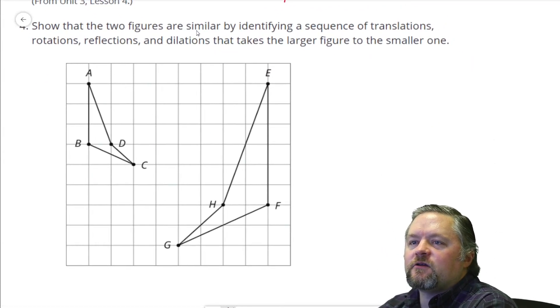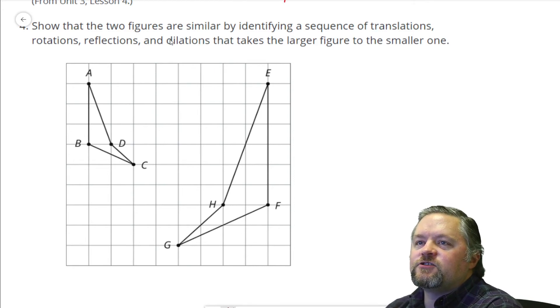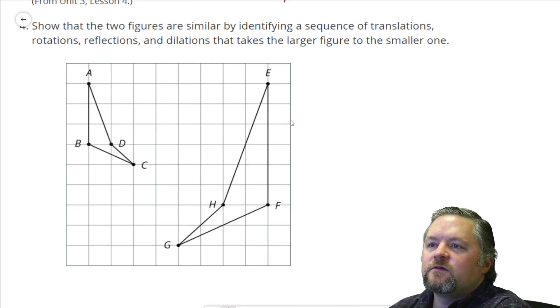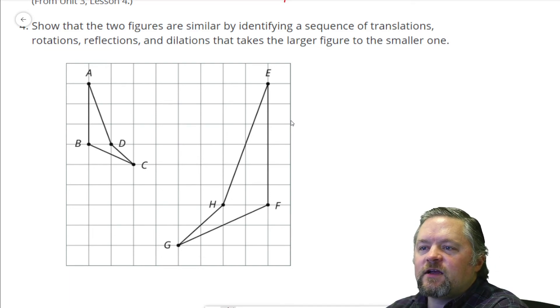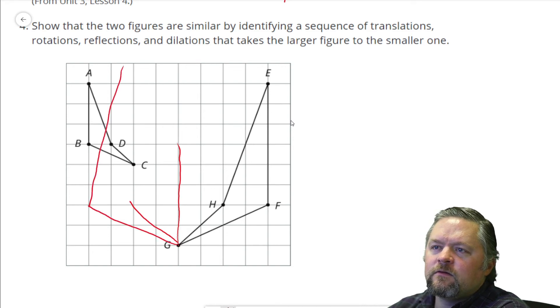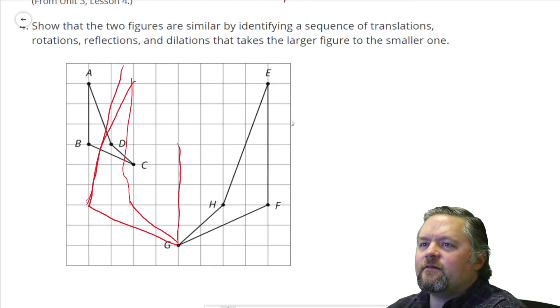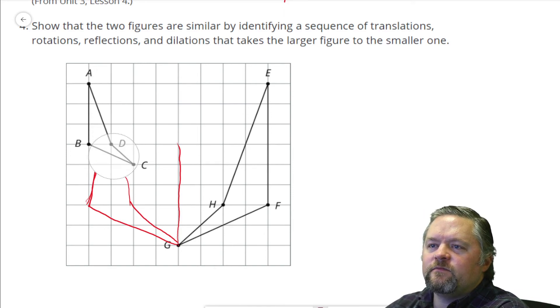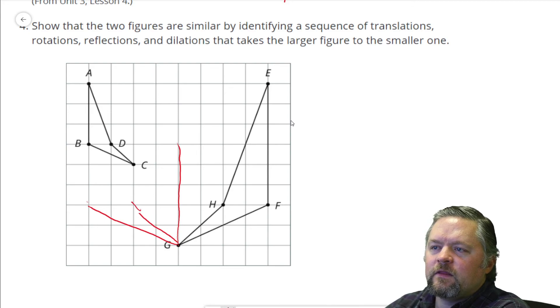Show that the two figures are similar by identifying a sequence of translations, rotations, reflections, dilation that takes the large one to the small one. So we want to take the big one to the little one. The first thing I'm going to do is reflect it. If I reflect it over that line, it's going to look like that. Because somebody did a mediocre job with it, no, I had the wrong one going straight. It's going to look like that.